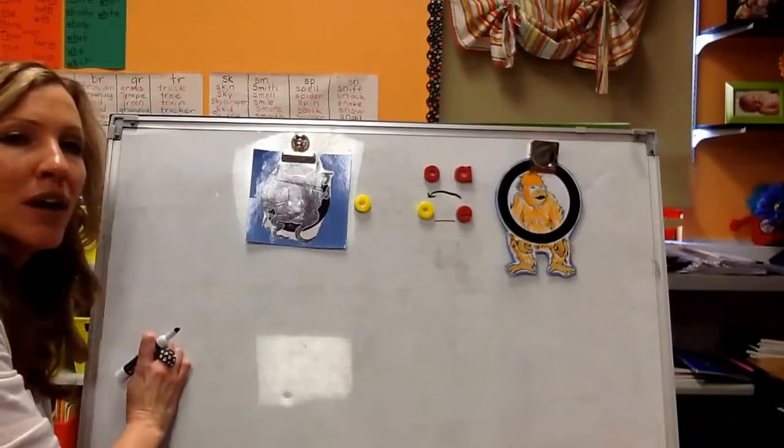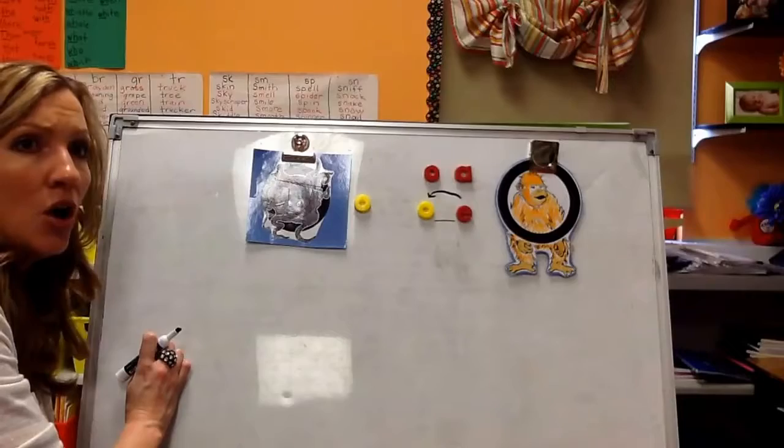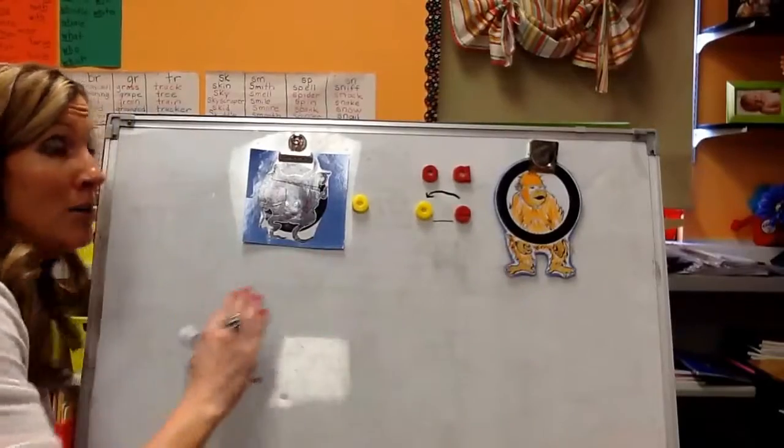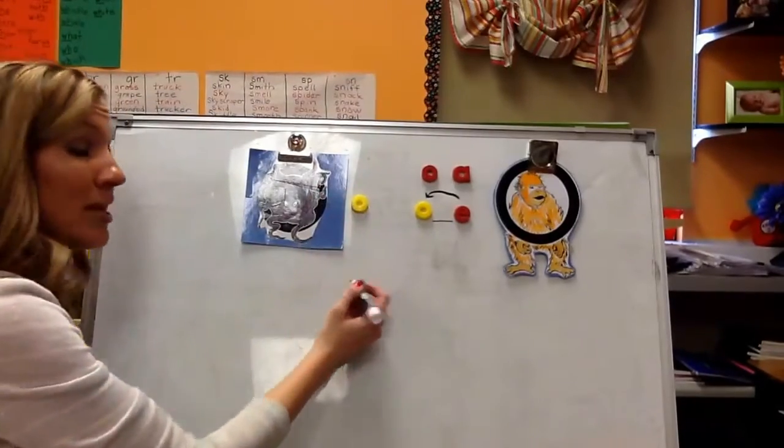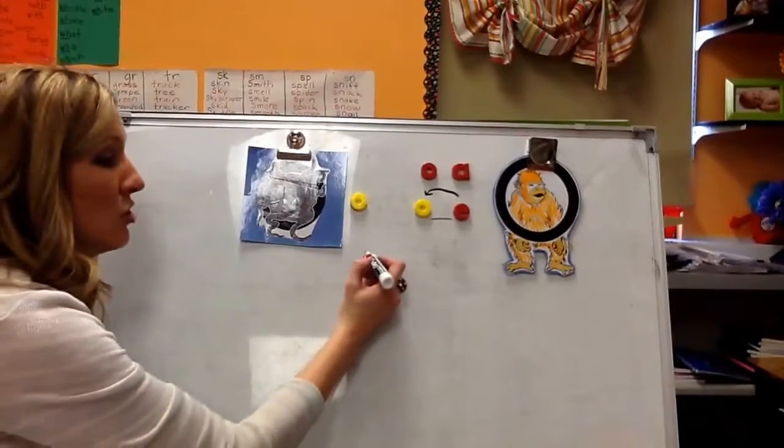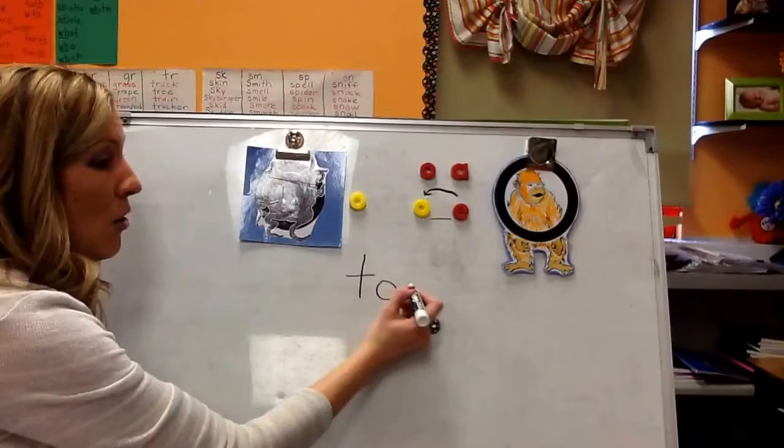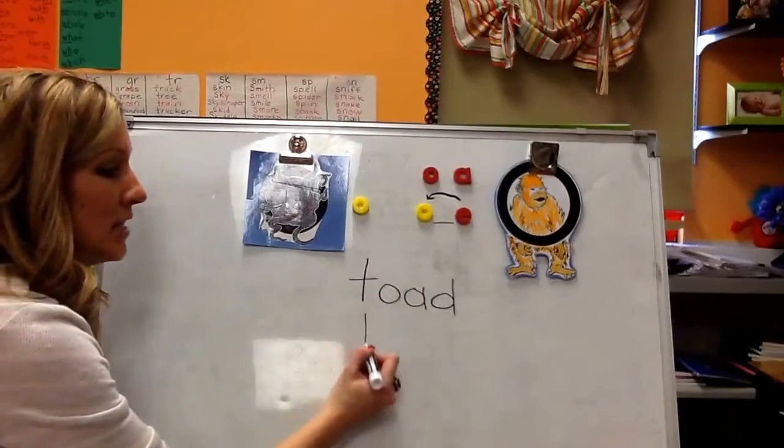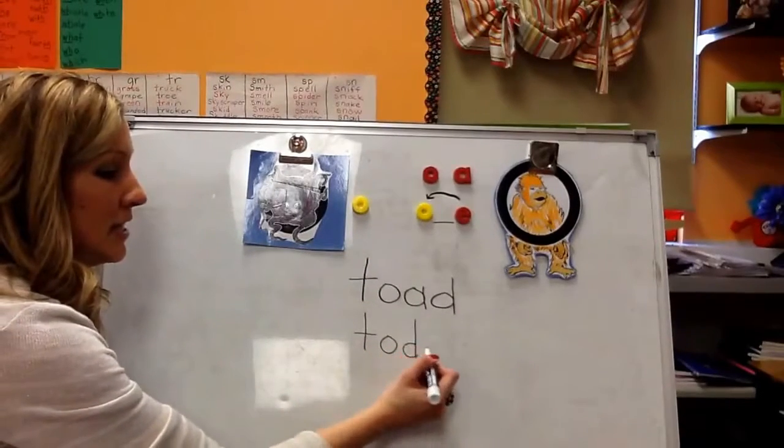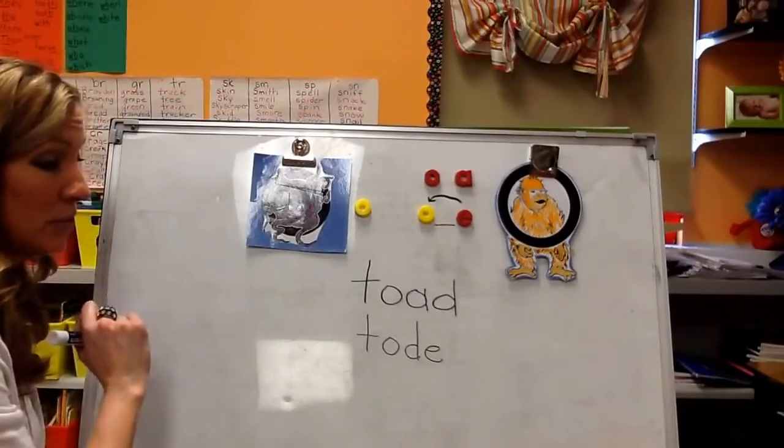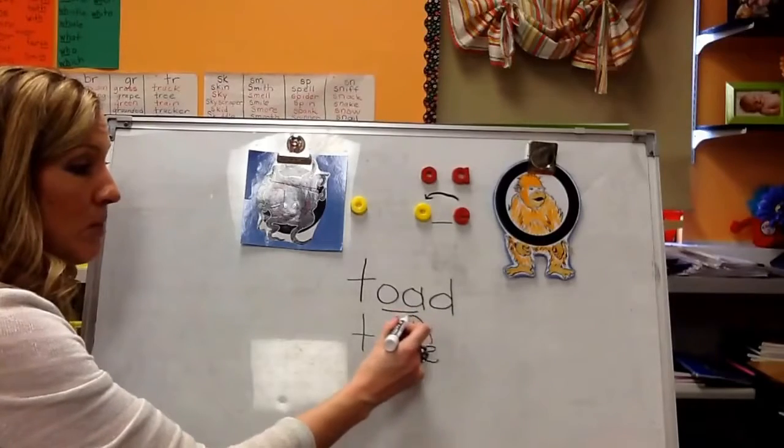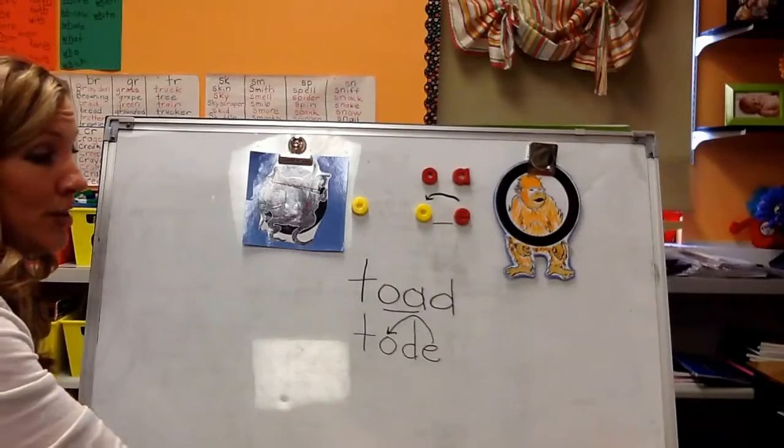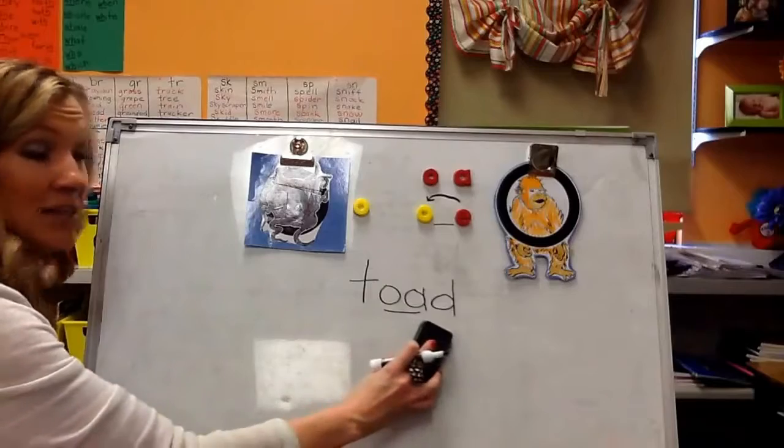The next word I'm going to write is toad. So I know I hear opal orangutan. So I know that it's going to be this way or this way because these are the two ways we've learned. So let's try it and ask ourselves, does it look right? So does toad look right T-O-A-D? Or does it look right T-O-D-E? And I'm thinking as a writer that it looks right for toad is T-O-A-D. So that's how I'm going to write it.